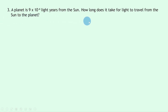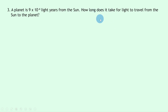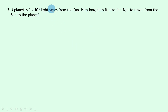Lastly, question three says: a planet is 9×10⁻⁴ light years from the sun. How long does it take for light to travel from the sun to the planet? Notice we're not asked for a distance this time — it's asking for a time. But to find the time we need the distance in meters, not light years, because we can't use light years directly in our speed-distance-time equation.